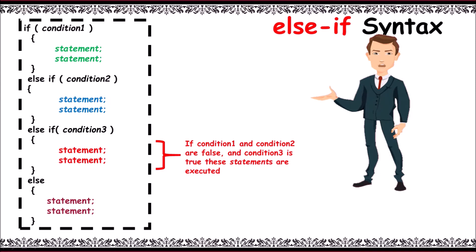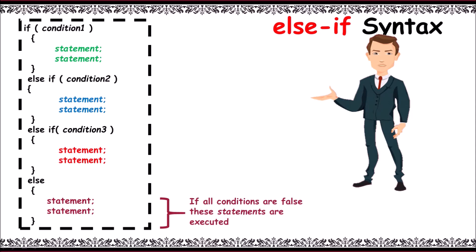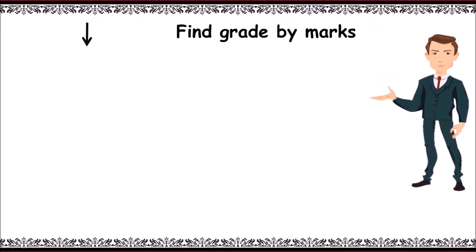the last point is if all the conditions above are false, final else block gets executed. Kindly note the simple else is to be placed at the last. Now, in order to get a proper idea, let's have an example